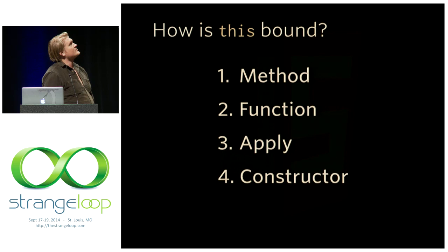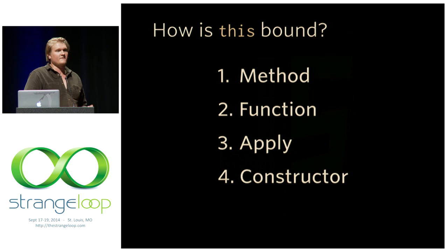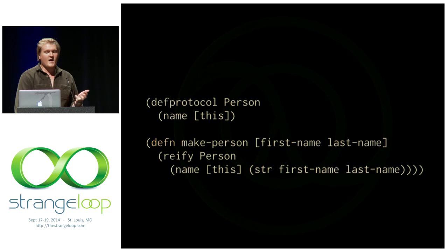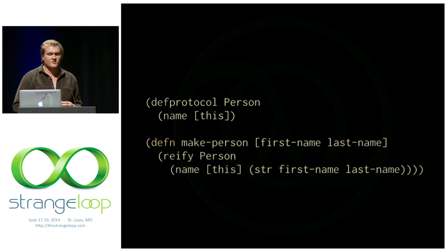This is another example of something in JavaScript that's incidentally complex — there are four slightly different ways that 'this' gets bound, and it gets magically bound behind the scenes. Once you've been programming for a long time you learn to memorize these four different ways, but it's really not necessary for there to be four. In ClojureScript we only have one method of binding, and we're not even binding it — it's explicitly passed in as the first argument to protocol functions.